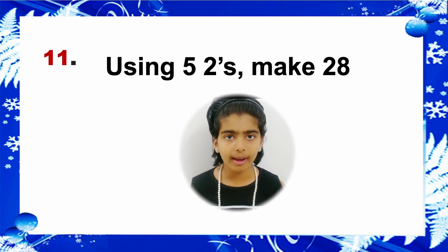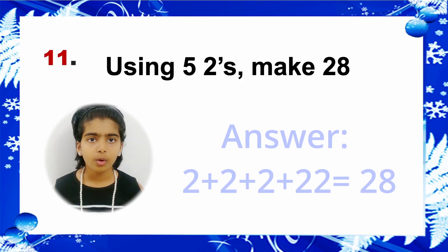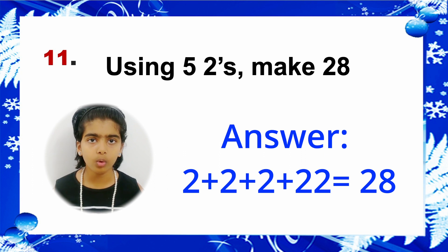Riddle 11: Using five 2's, make 28. Answer: 2 plus 2 plus 2 plus 22 is equal to 28.